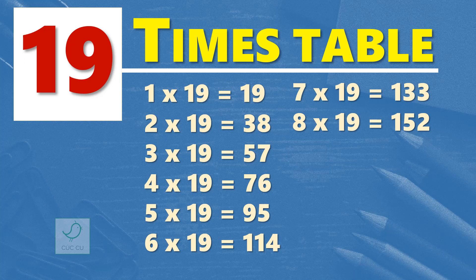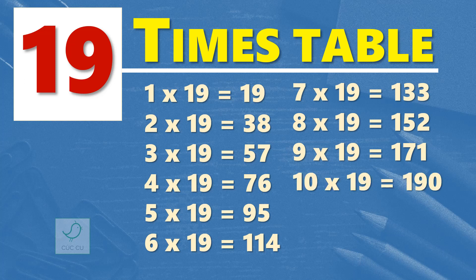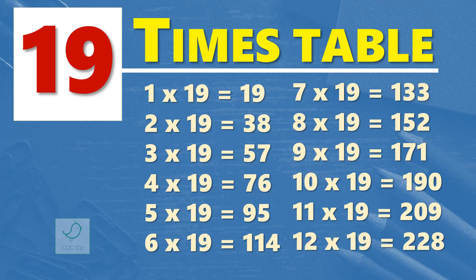Nine times 19 are 171. Ten times 19 are 190. Eleven times 19 are 209. Twelve times 19 are 228. One more time.